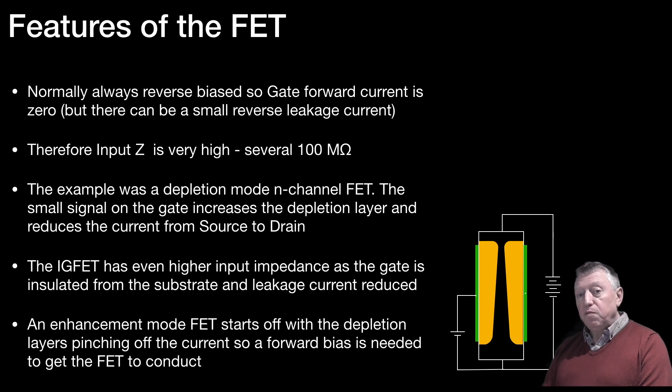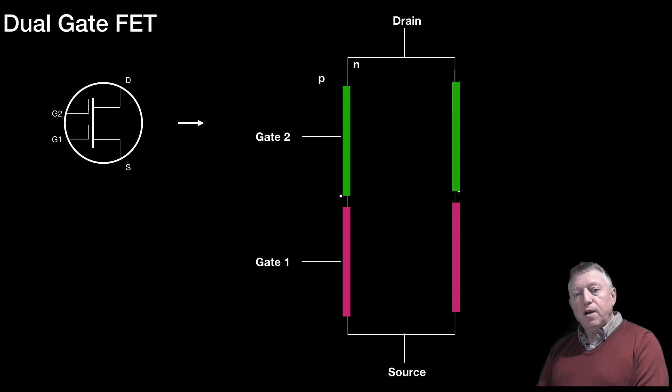So, the FET that we've been looking at so far has had a source, a drain and a single gate. But here, on your screen, you can see both the symbol and the 2D representation of a dual-gate FET. And it's exactly the same as a single-gate FET, but it has the addition of an extra gate. And they're just simply labelled Gate 1 and Gate 2.